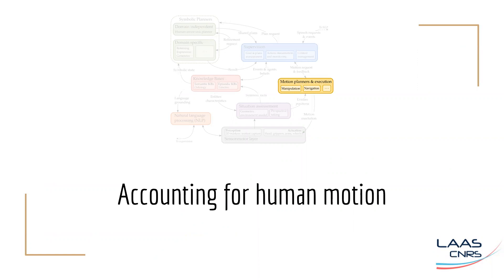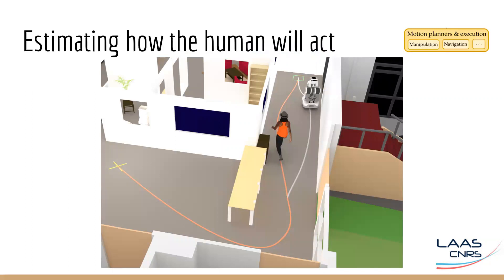Next, we move on to how the robot accounts for human motions and moves in a human environment. The robot moving in a human environment needs to estimate the possible motion of the human — how will the human move in the vicinity — and also how they will react to the robot's actions to complete navigation. On top of this, the robot also needs to obey certain social norms prevalent in society. This increases the legibility of the robot's motion and also increases its acceptability by humans.